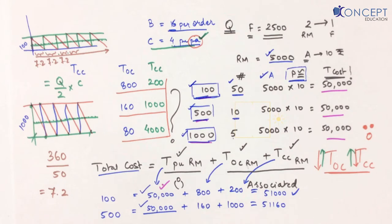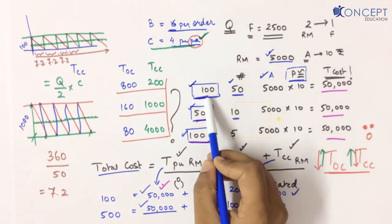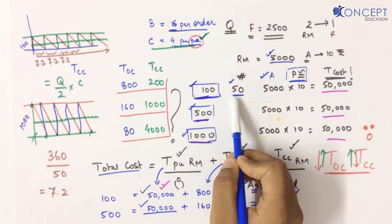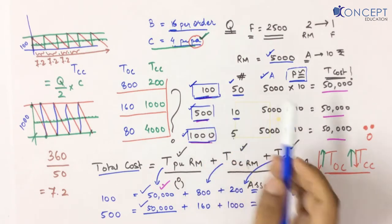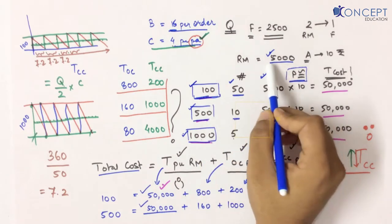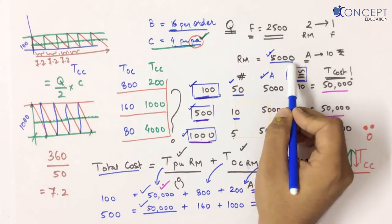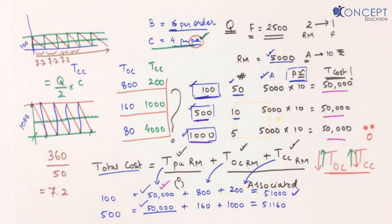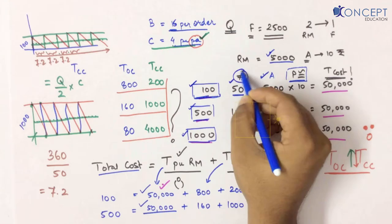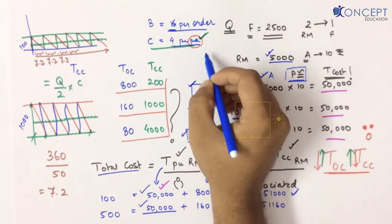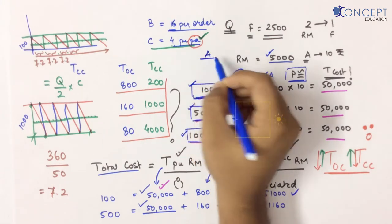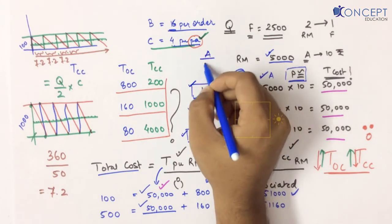Why are they variables? Because the smaller the quantity I ordered, the more times I had to order. How do I find my ordering cost? Very simple. What was my annual requirement? 5,000. To get the number of orders, the formula is: annual requirement of raw material divided by the quantity ordered each time.